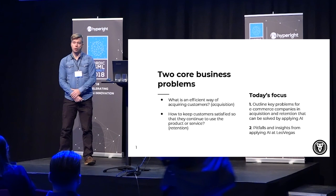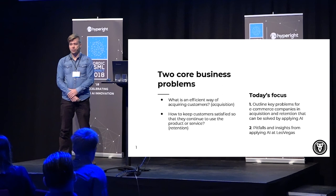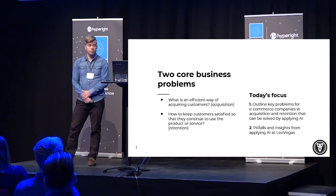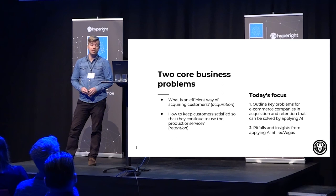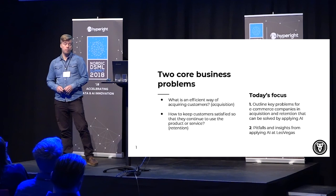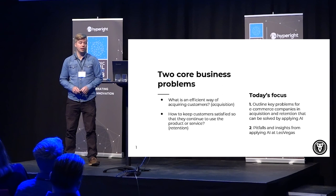Today we're going to take a look at two core business problems. We're going to be concerned with an efficient way of acquiring customers — that's the acquisition problem — and we're going to think about how we can retain customers in a good way. We're going to look at a slightly more general setting than a gaming company; we're going to look at e-commerce companies and show how you can use AI to solve them. We will also give you some insights from having done this at LeoVegas and some pitfalls.